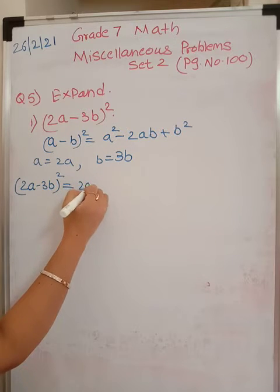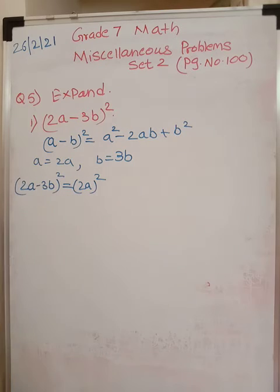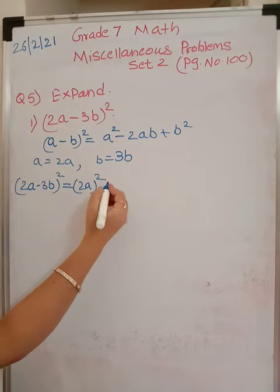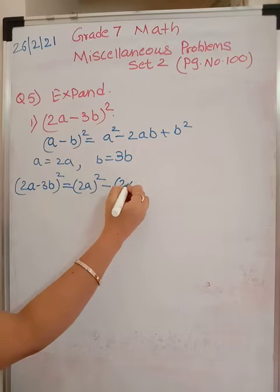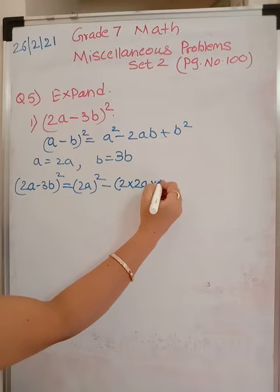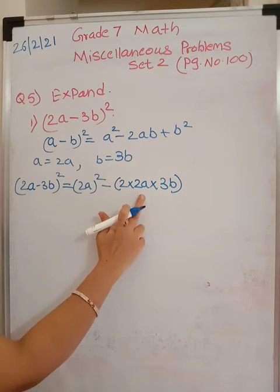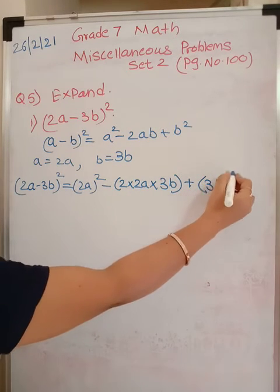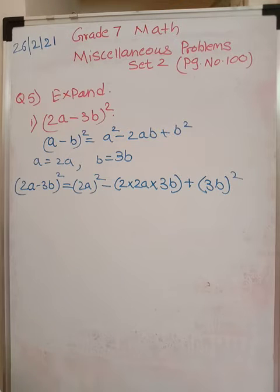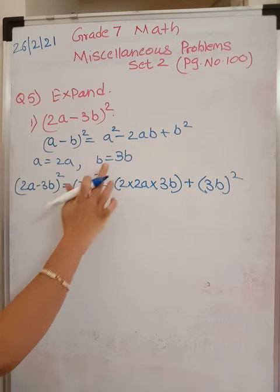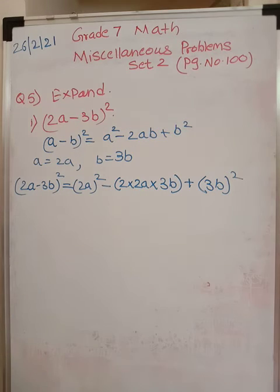So you have (2a-3b) the whole square is equal to, first is a². a is what? (2a) the whole square. Because there are coefficient and variable. We have over here 2 as well as a. So (2a) the whole square. Minus. Second is what? 2 into. What is my a? 2a into b. b is what? 3b. This is first term. This is second term. And third term is plus sign. And what is your b? (3b) the whole square.